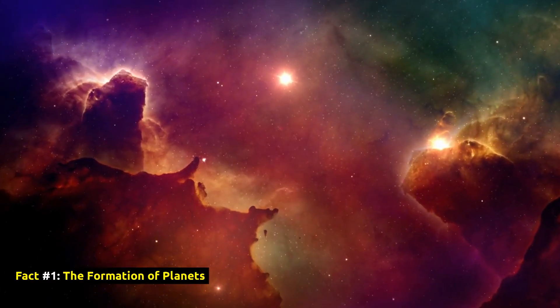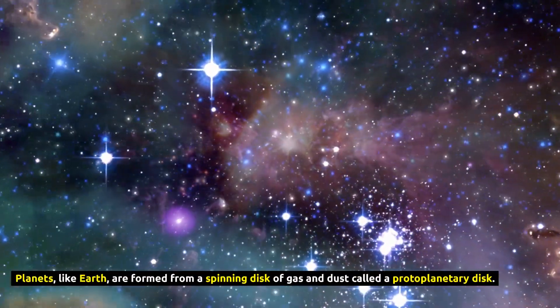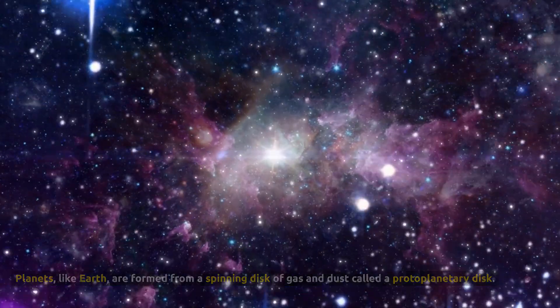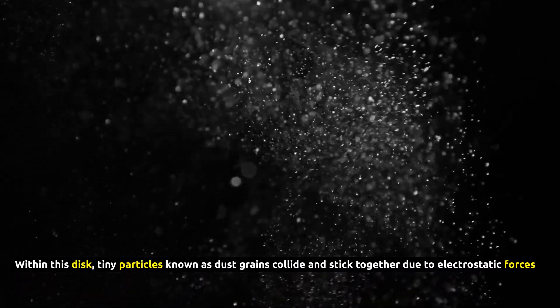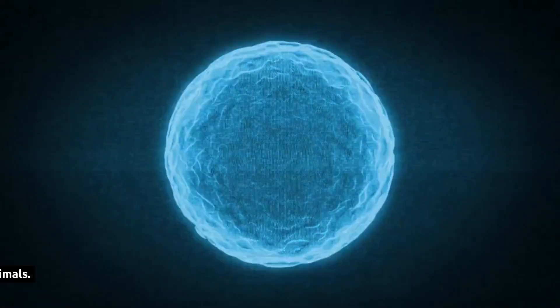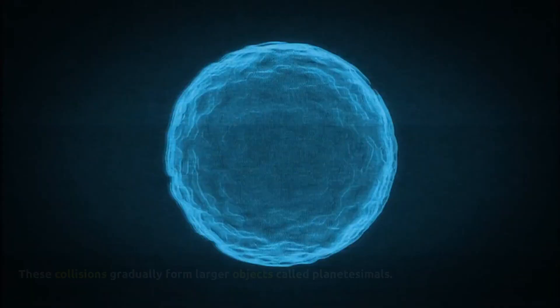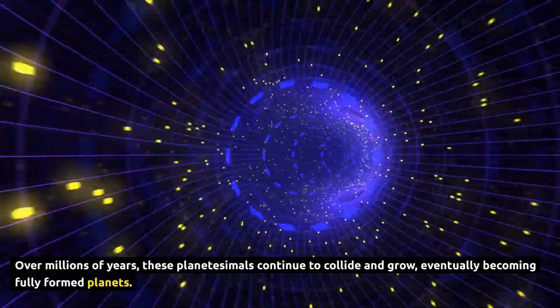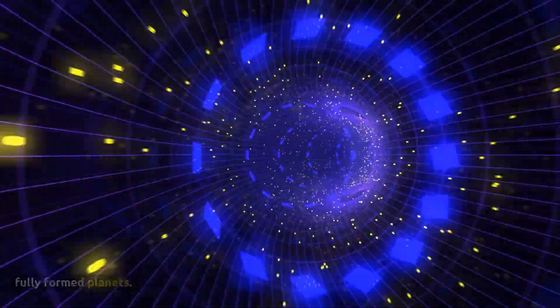Fact Number 1, The Formation of Planets. Planets, like Earth, are formed from a spinning disk of gas and dust called a protoplanetary disk. Within this disk, tiny particles known as dust grains collide and stick together due to electrostatic forces. These collisions gradually form larger objects called planetesimals. Over millions of years, these planetesimals continue to collide and grow, eventually becoming fully formed planets.